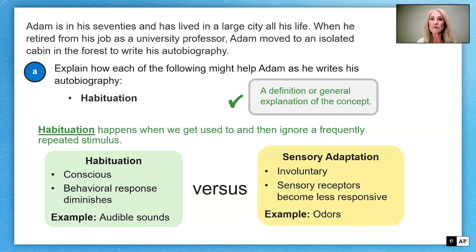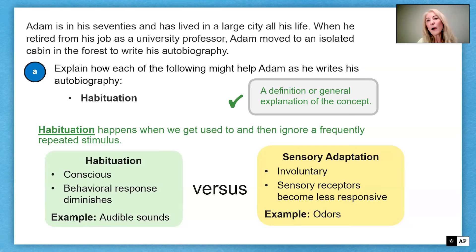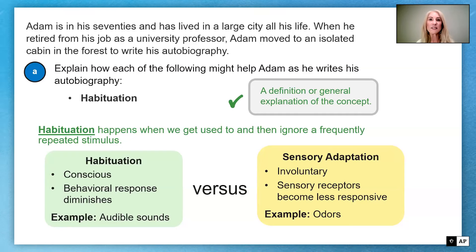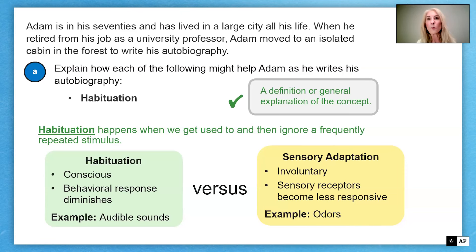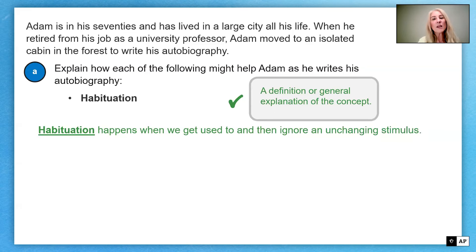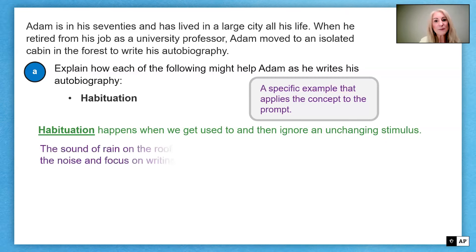Habituation is very different from sensory adaptation. If you jump into a cold pool and no longer feel cold after a while, you've adapted to it — that's involuntary and happens at the sensory receptor level. It could also be odors, like smelling a tuna fish sandwich in a room and then not smelling it a few minutes later. With habituation, if asked whether you hear the lawnmower, you'd say yes — you still hear it, but you're ignoring it.